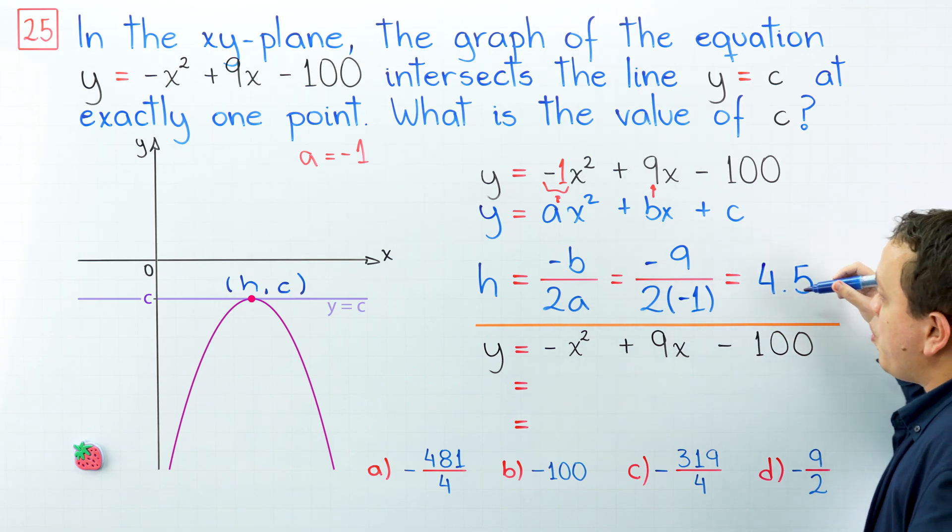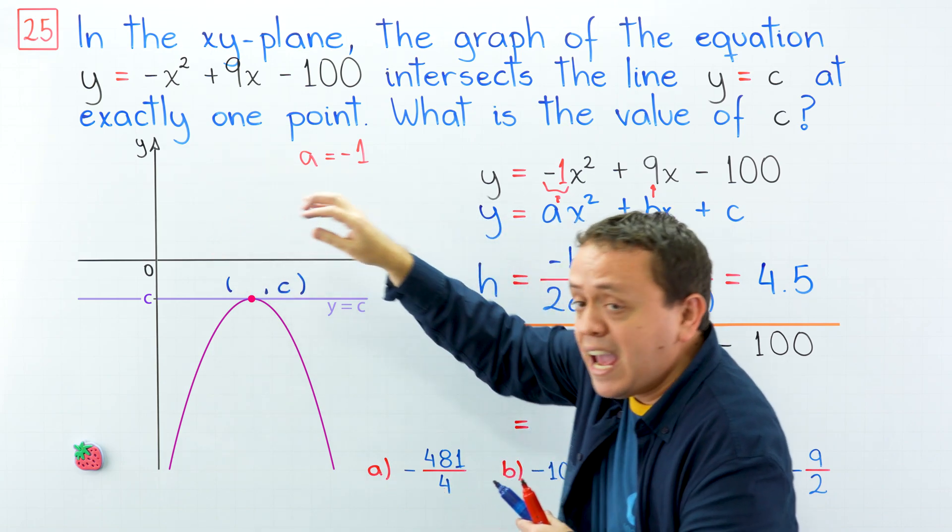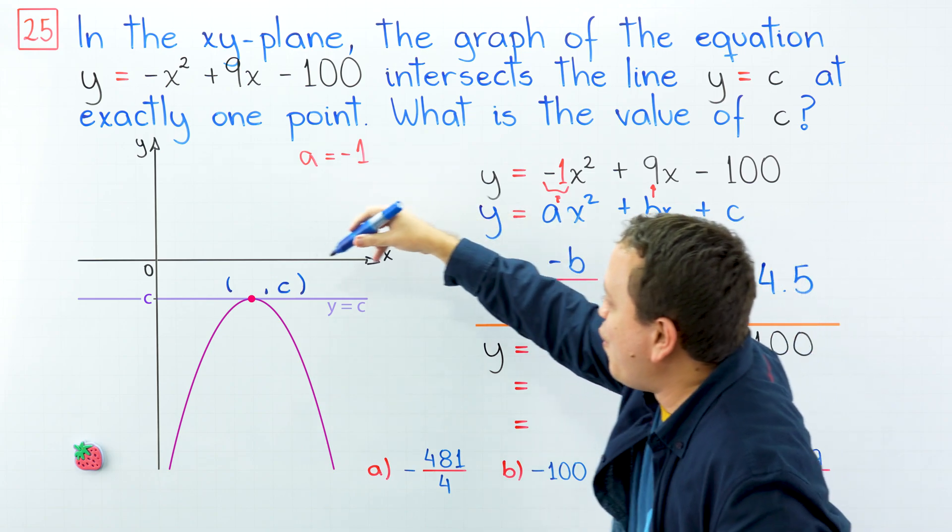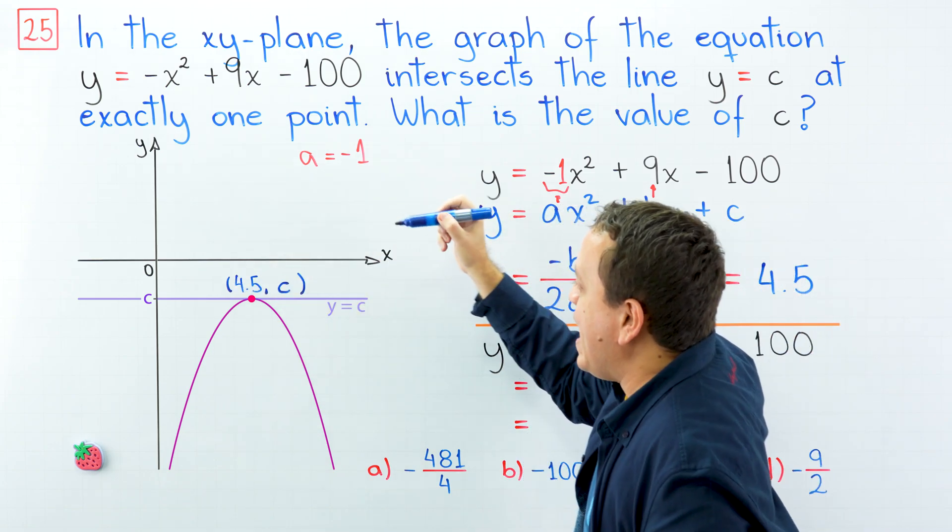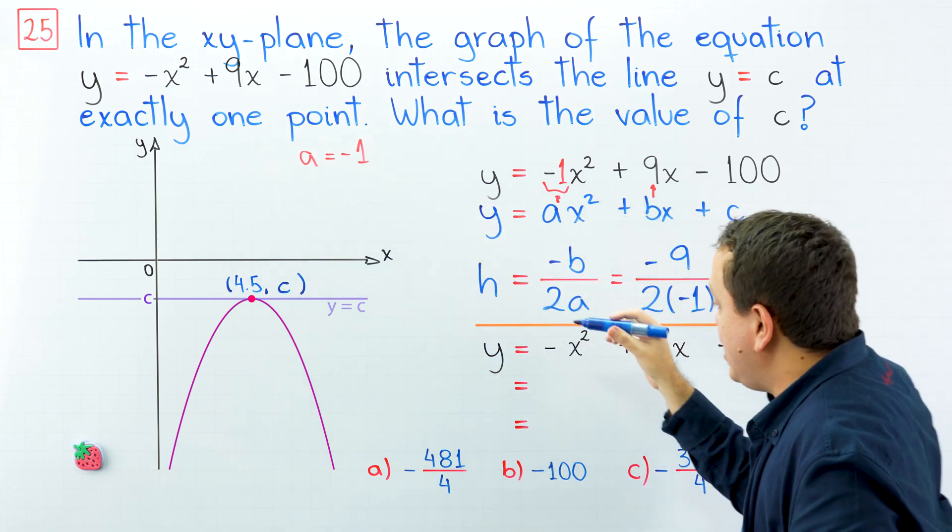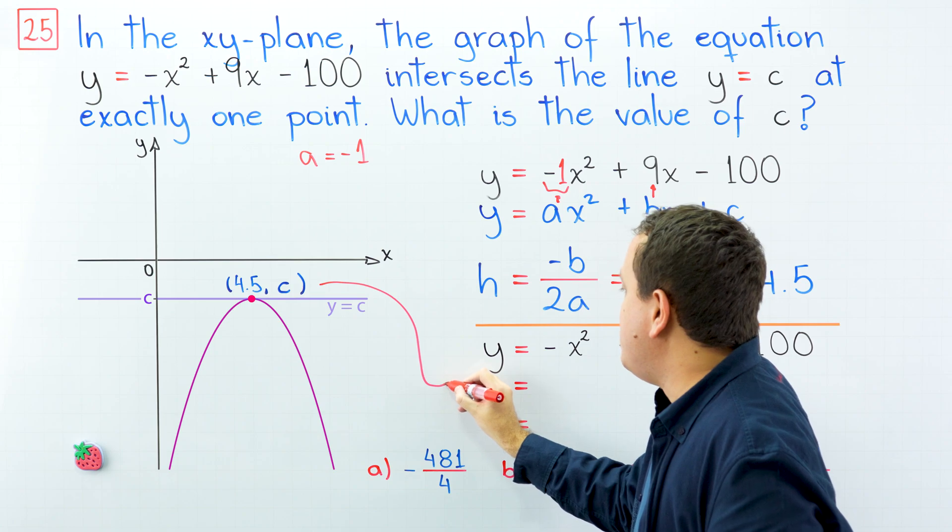In the next step, we're going to replace the value of h. I'm going to change this value. Instead of h, we're going to write 4.5. And now we will plug these two values into our function to get the value of c.